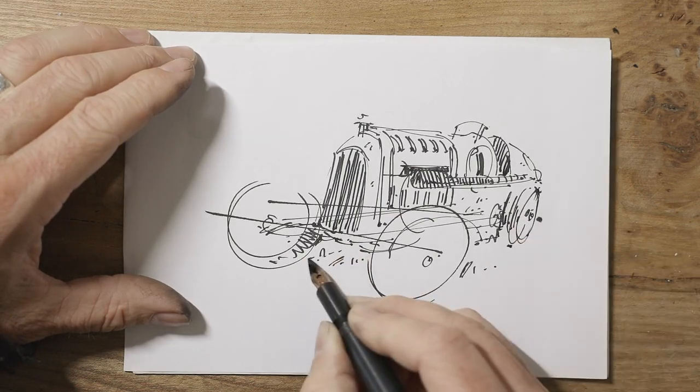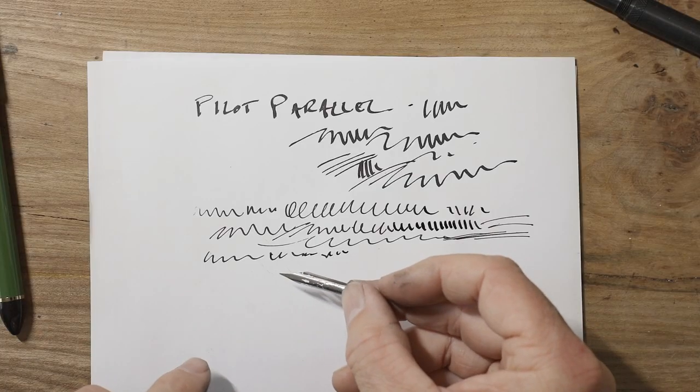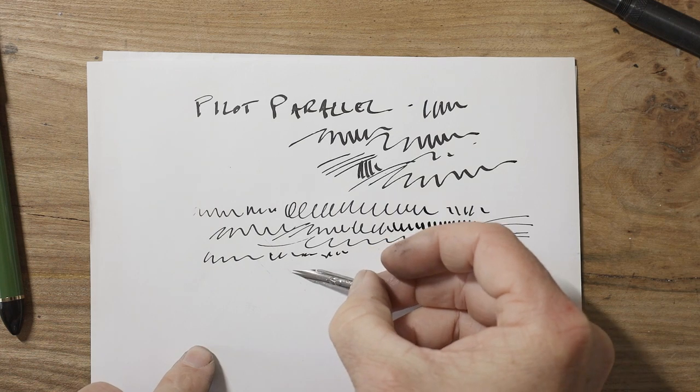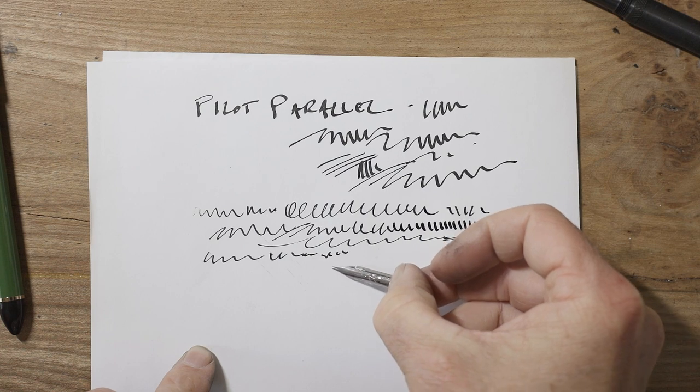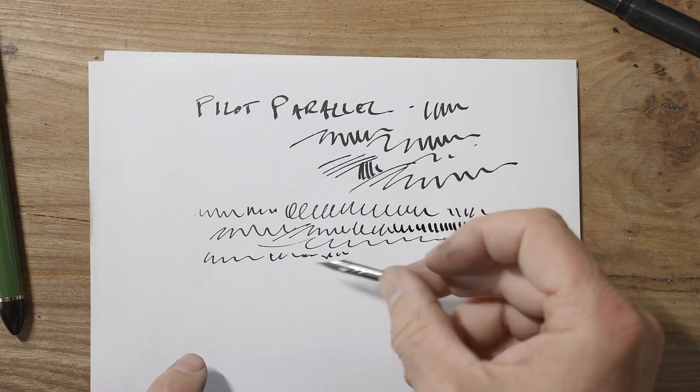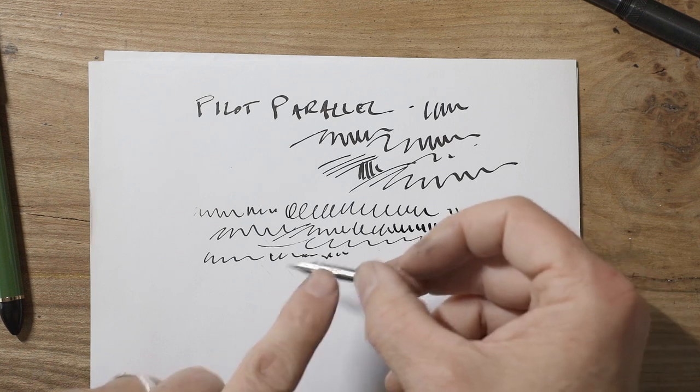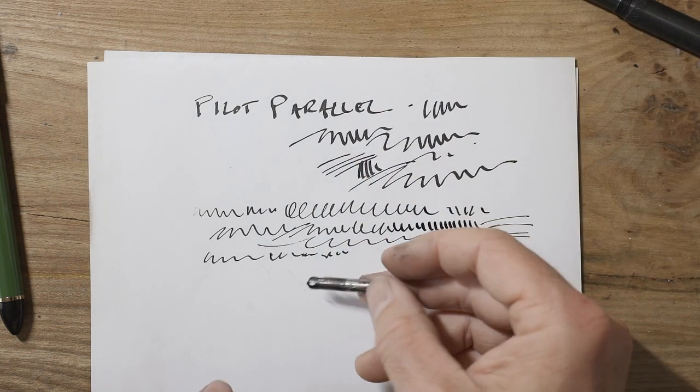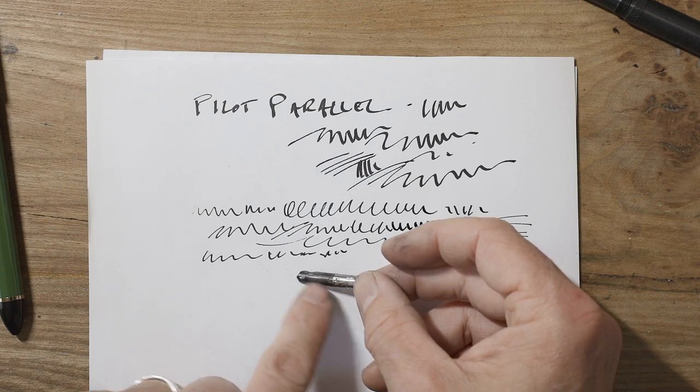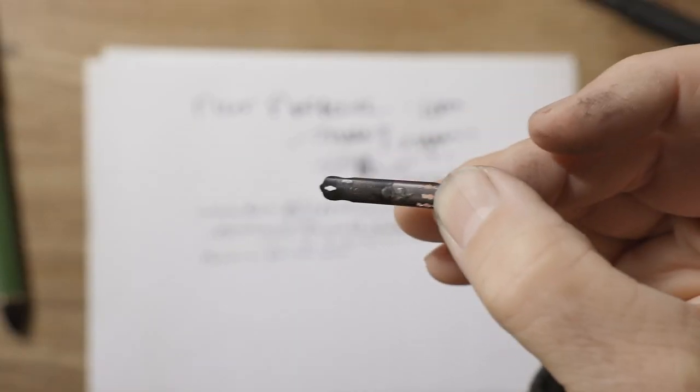So you can use things like these Brause rose nibs, which are very flexible. Just the tiniest amount of pressure allows the tines to split, which will give you a very broad range of thicknesses. But as I say, these will oxidize if you leave them in the pen, even overnight. You see this black here, so that's the oxidizing there.